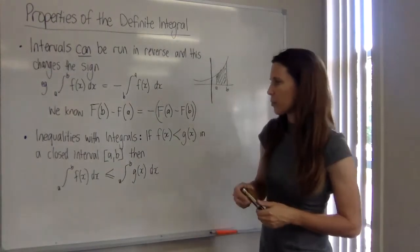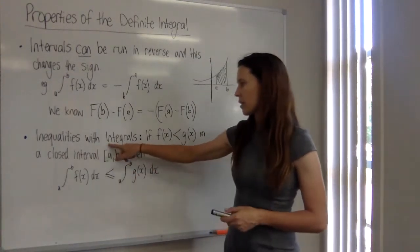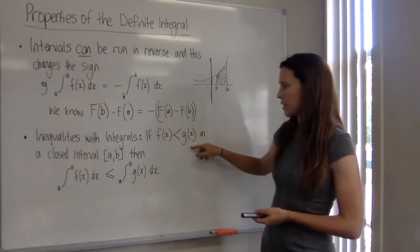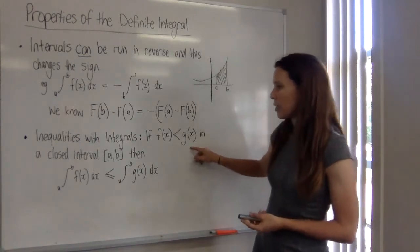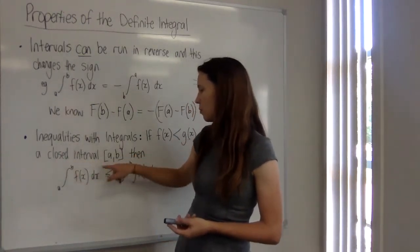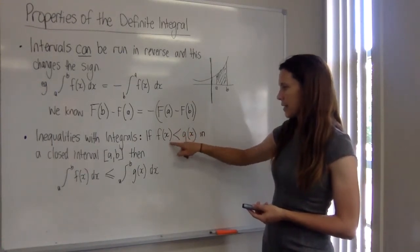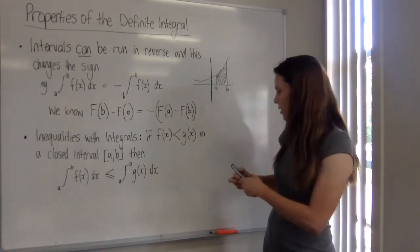And the last important point to note here, if we have inequalities with integrals. So let's say we've got two functions, F of x and G of x, and we know that within a certain closed interval between a and b, our upper and lower bounds, we can see that F of x is always less than G of x.